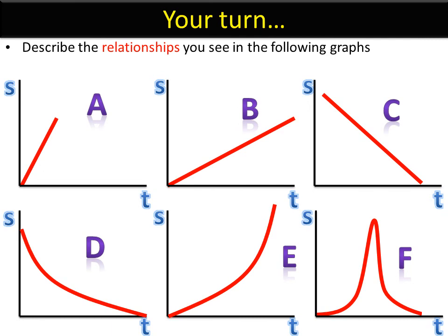And if you didn't pause the video, here are the answers. A is directly proportional. B is directly proportional, but if you want to compare that with A, it's increasing at a slower rate. C is inversely proportional.